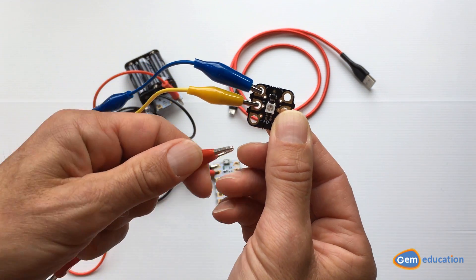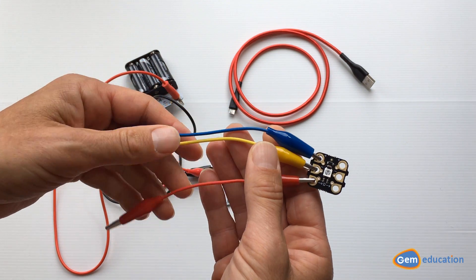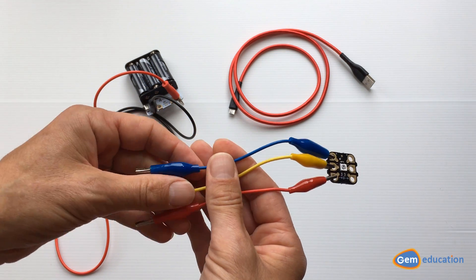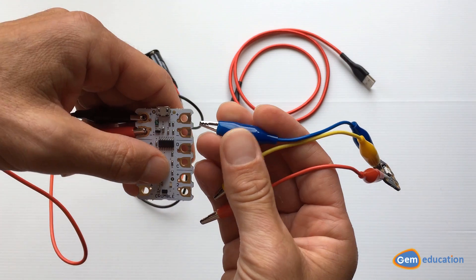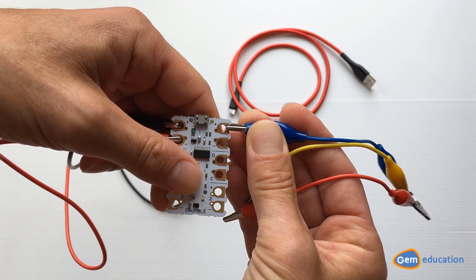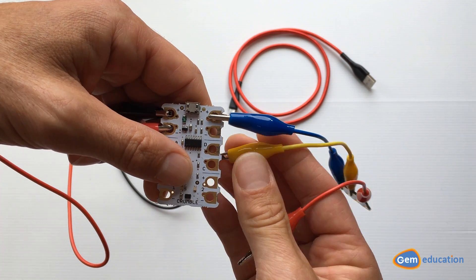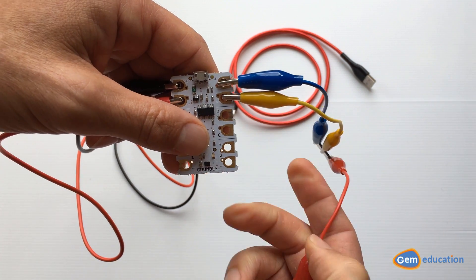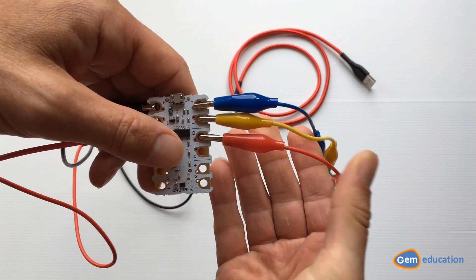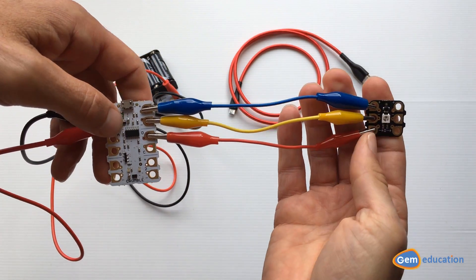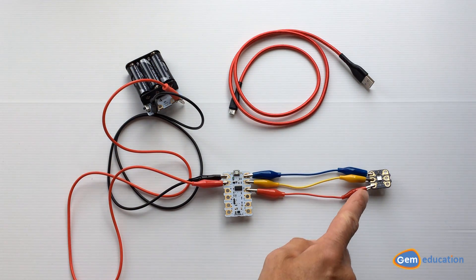The plus on my sparkle goes into the plus on the right side of my crumble, the minus on my sparkle goes into the minus on my crumble, and then the D goes into the D. So now I've connected my battery pack and my sparkle.